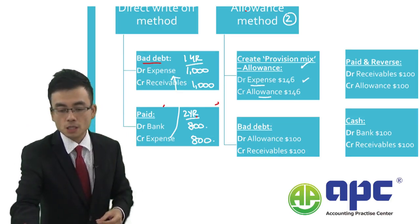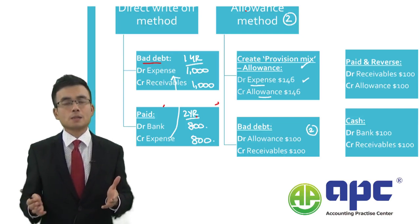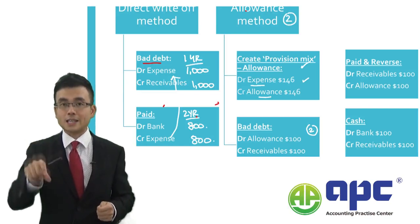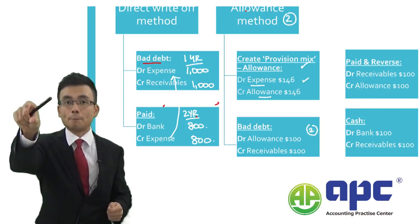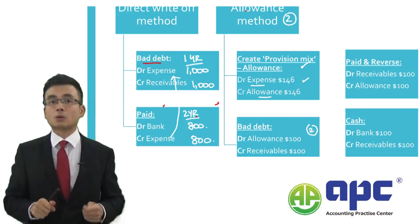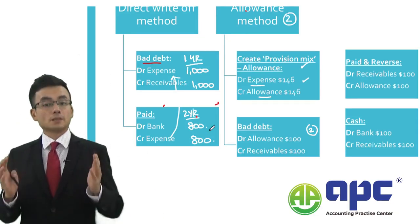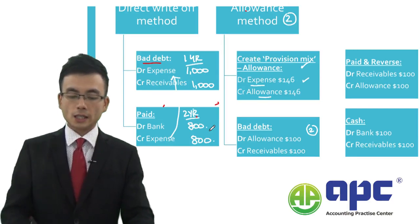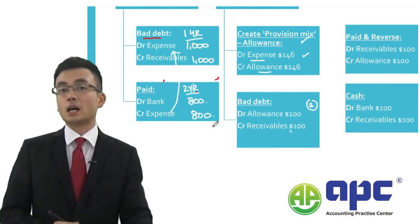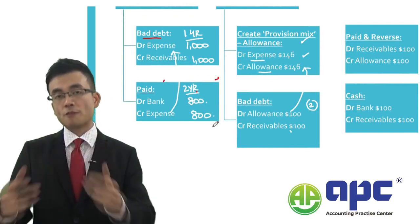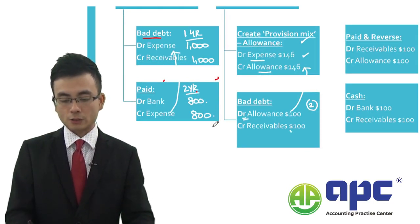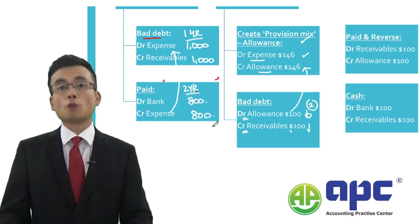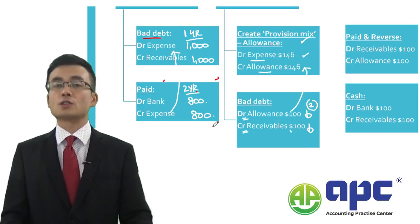In step two, if I receive a message from my customer and the customer decides not to pay $100, we charge that irrecoverable debt directly against the pool — the allowance worth $146. Because the customer does not pay us $100, we reduce the allowance from $146 by performing the reverse entry: debiting the allowance for $100 of the bad debt, and crediting to reduce the receivables by $100, because we will not receive that $100.